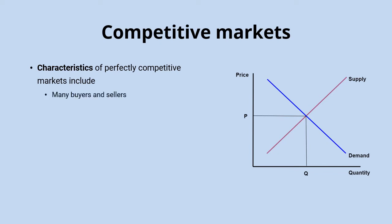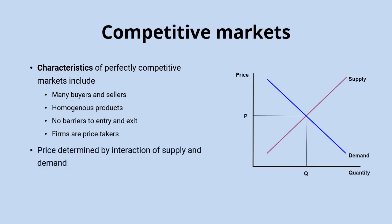The characteristics of perfectly competitive markets are: many buyers and sellers, so there are a large number of small firms all trying to sell their output to a large number of buyers. Those firms are producing homogeneous products, meaning the products they make are completely identical across every single firm in that market. There are zero barriers to entry and exit, so it is completely costless and easy for firms to move into and then exit that market.